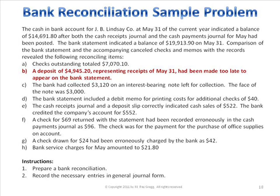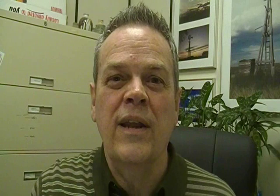The second item is a deposit of $4,945.20 that had been made too late to appear on the bank's statement. It's a time lag — we have already recorded it, but the bank hasn't had a chance to process it yet. That also goes on the bank side of the reconciliation, but this time it's an addition. When that deposit gets to the bank, they will add it to their balance, and we reflect that here.